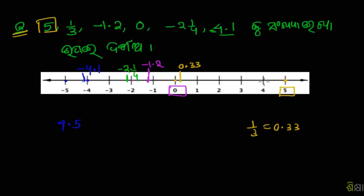What is the point of 4? 4 and 5. So we have 4.5. We have 3.7. What is the point of 3? 3 and 4. So we have 3.4. So we have 4.5 and 3.7.